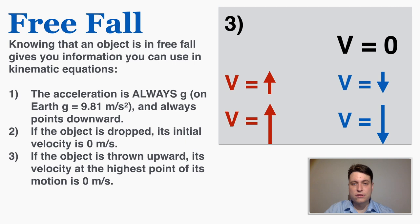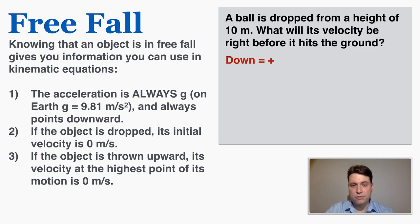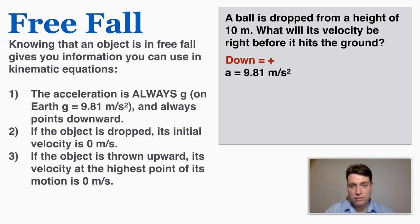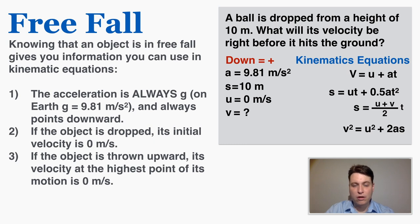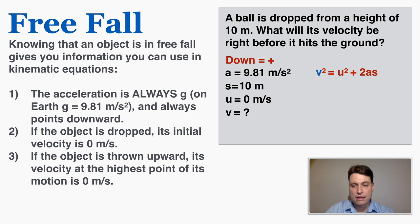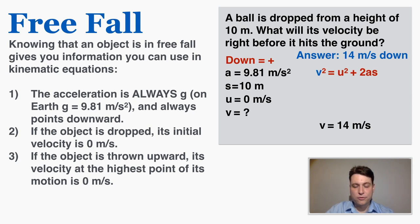Let's try an example: a ball is dropped from a height of 10 meters — what will its velocity be right before it hits the ground? I'll consider down to be positive so I'm only dealing with positive numbers. The acceleration is positive 9.81 m/s², the displacement is positive 10 meters, and the initial velocity is 0 m/s because it's dropped. Using the fourth kinematics equation, the final velocity is 14 meters per second downward.